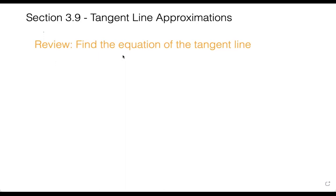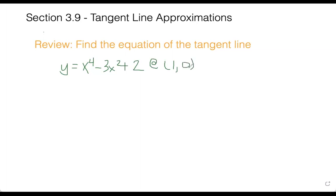Let's do a review question on finding the equation of a tangent line. Recall that you have an equation — we're going to go with y equals x to the fourth minus 3x squared plus 2. They'll ask you to find the tangent line at a certain point. To find the equation of the tangent line, we use the derivative. So using the power rule, y prime equals 4x cubed minus 6x, and the constant is 0.